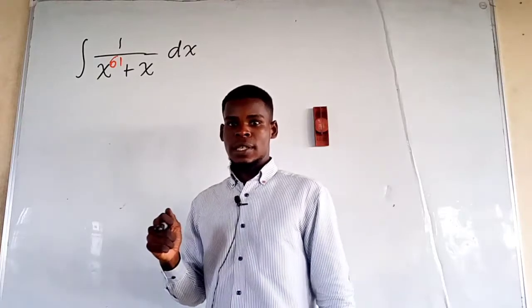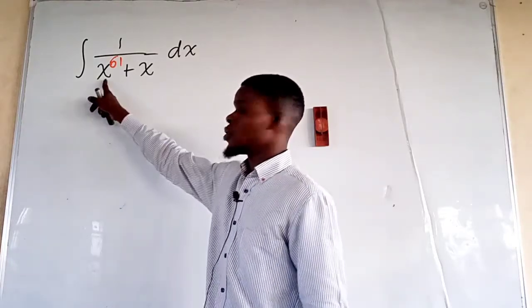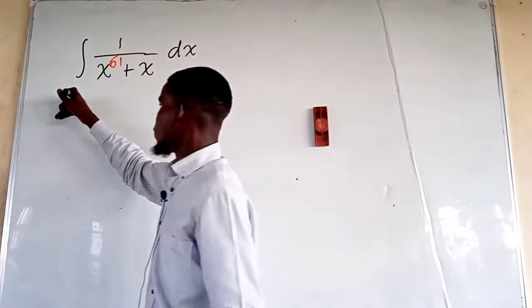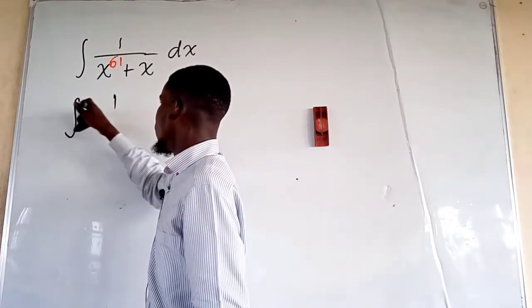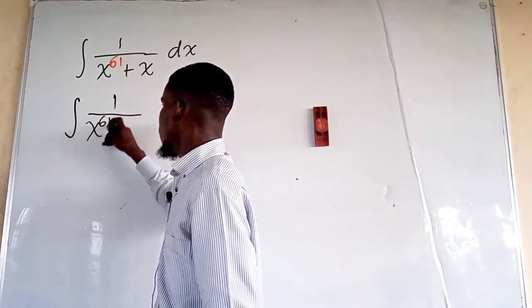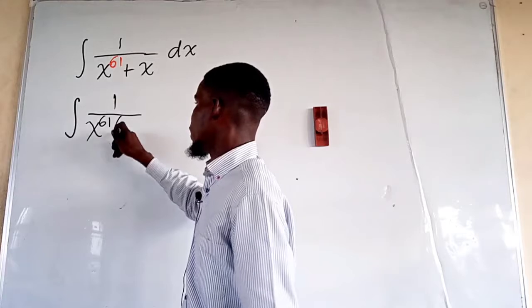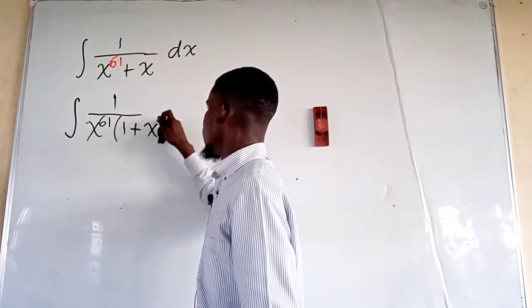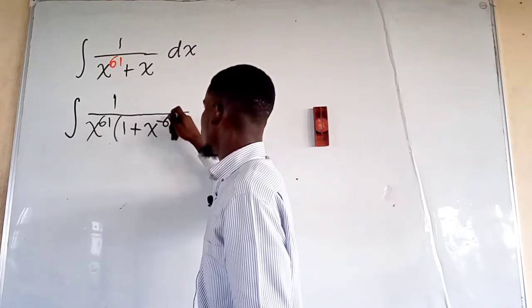The idea I'm going to use here is to actually factorize this. So put that down: the integral of 1 over—I now factorize x to the power 61 and we are now left with 1 over here plus x to the power negative 60, and then we put down the dx.